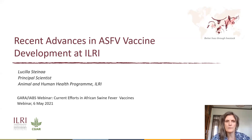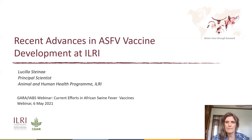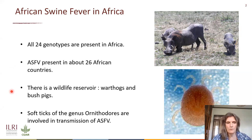Good morning, everyone, and thanks to the organizers for the opportunity to talk today. I'm going to talk about recent advances in African swine fever vaccine development at ILRI. The African swine fever situation in Africa is quite different from what we know from East Europe and Asia. All 24 known genotypes are present in Africa, and the virus is present in about 26 African countries with regular outbreaks, also depending on the number of pigs and pig production in the respective countries. There is a wildlife reservoir, and soft ticks of the genus Ornithodoros are involved in transmission.